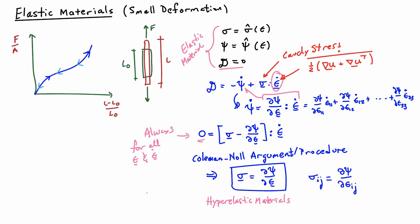If we want, we can write this in index notation. It says that the ij component of the stress is equal to the derivative of the free energy with respect to the corresponding ij component of the strain. So sigma 1-2, for instance, is equal to the derivative of psi with respect to epsilon 1-2. Sigma 3-3 is the derivative of psi with respect to epsilon 3-3, et cetera.